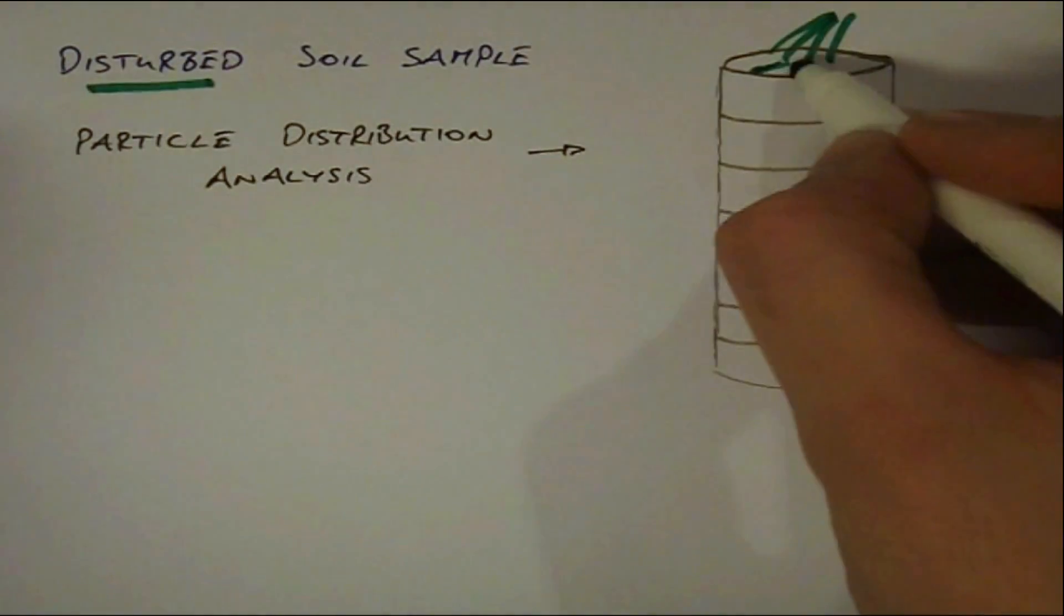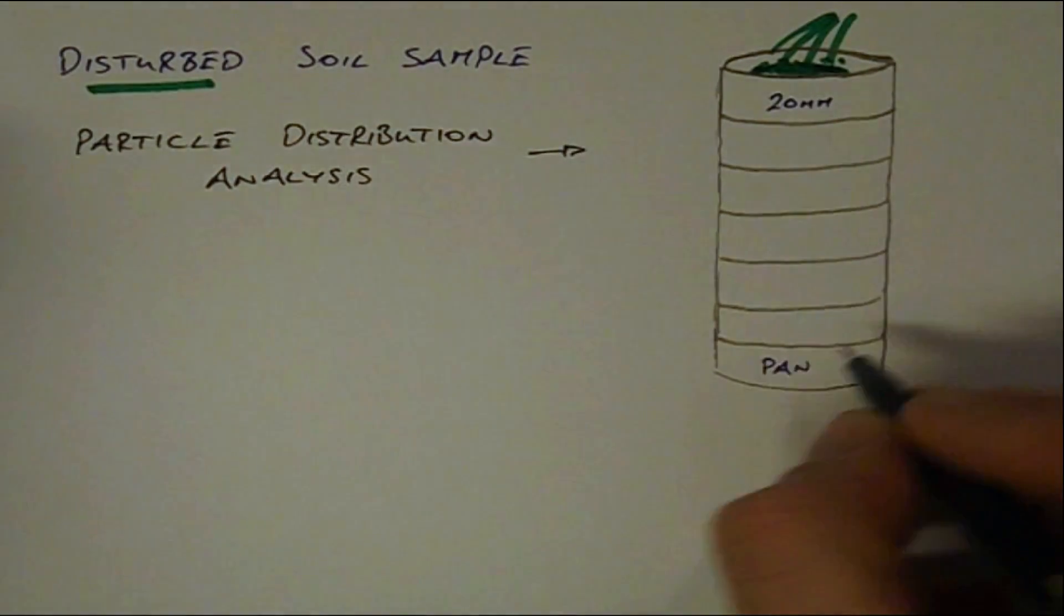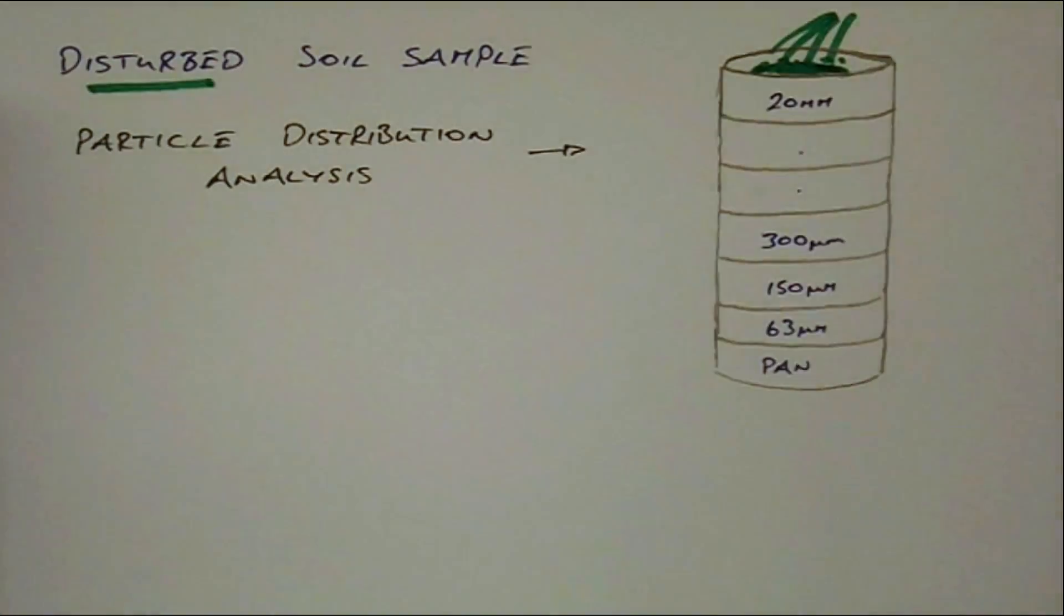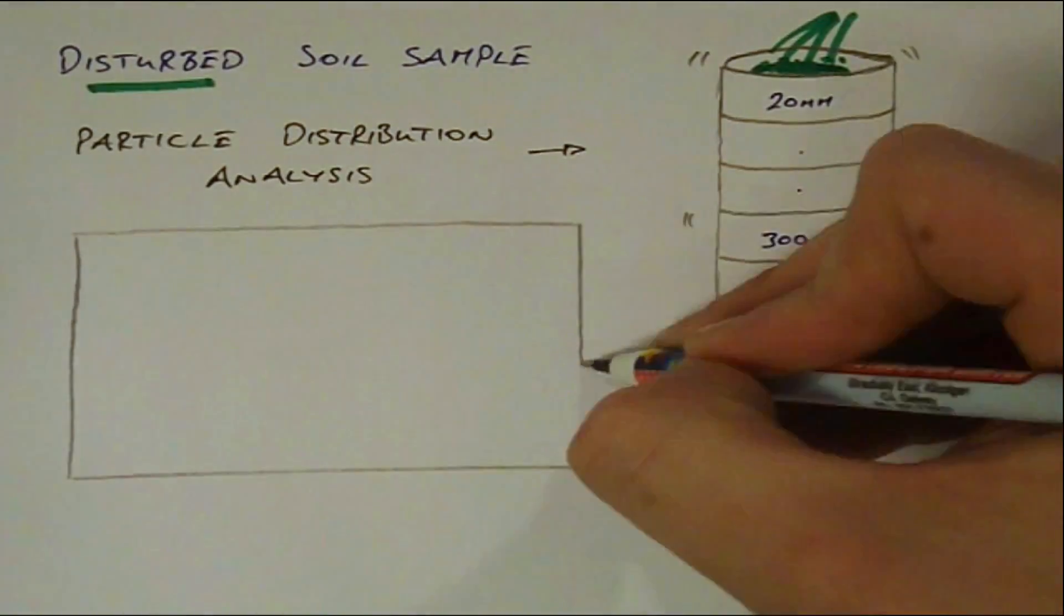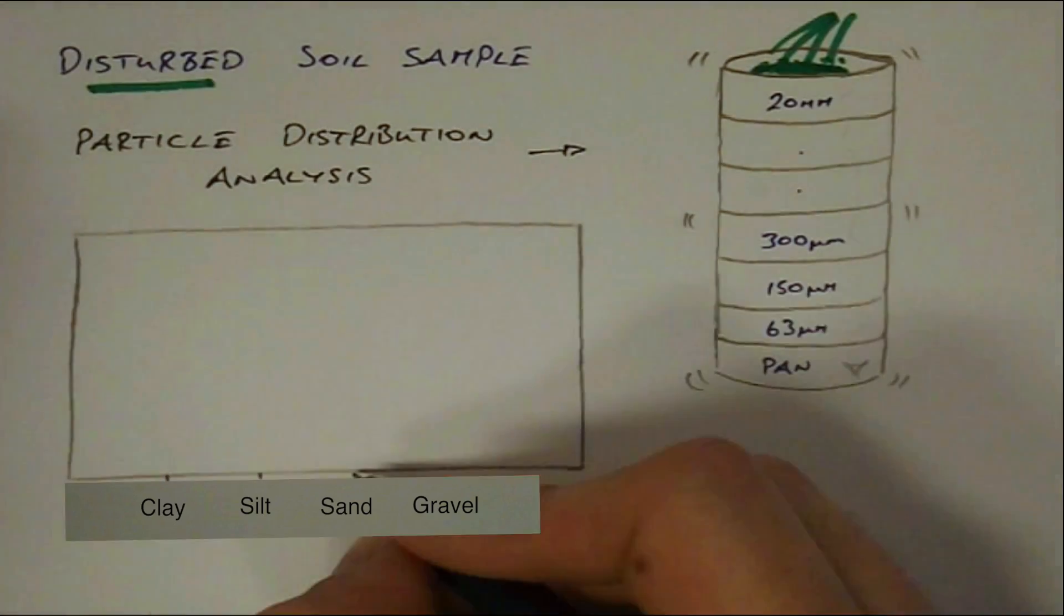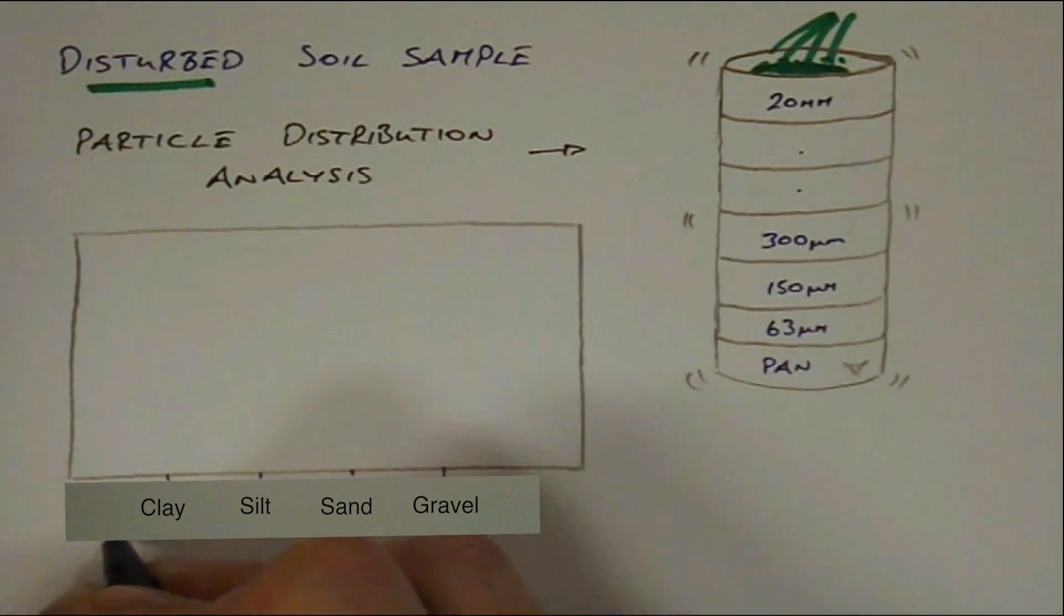The largest sieve on top and the lower sieves getting progressively smaller as shown. The results are plotted on a graph and from this the engineer can infer typical behaviors of the soil.